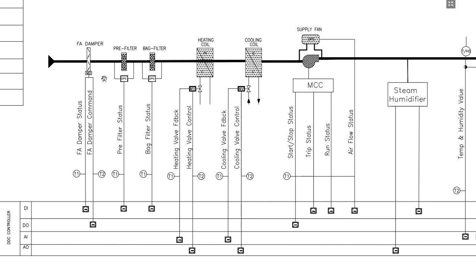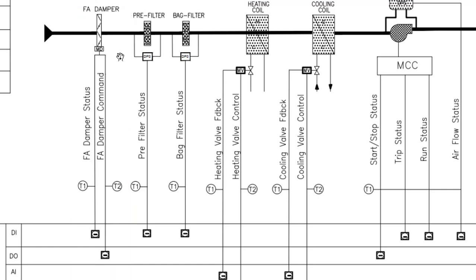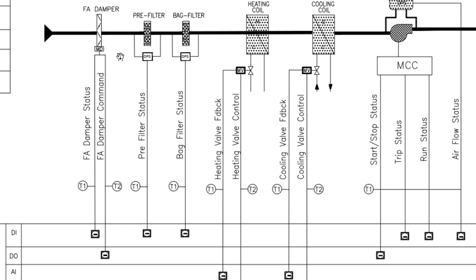Now let's talk about the components of the schematic diagram. First, the fresh air damper is shown here, which has two points — one is a command point and another is a monitoring point. Point type is also shown in the schematic diagram. The fresh air damper command uses a T2 type cable because we need power supply and command for this damper. The fresh air damper status uses T1 type, which is only a two-conductor wire. Then we have pre-filter and bag filter dirty status. We are using a differential pressure switch for monitoring the clean and dirty status of the filters. These are only DI monitoring points, and we are using T1 cable because we need only a two-conductor cable here.